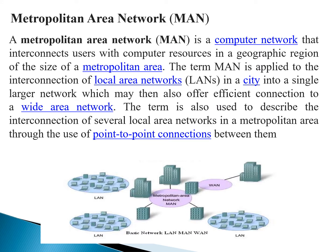The next type is a Metropolitan Area Network (MAN). If there are offices in different cities and we need to connect them, we use a MAN. A MAN is a computer network that interconnects users with computer resources in a geographical region the size of a metropolitan area. MAN is applied to the interconnection of local area networks within a city into a single larger network, which may also offer an efficient connection to a wide area network. It describes the interconnection of several LANs in a metropolitan area through point-to-point connections.